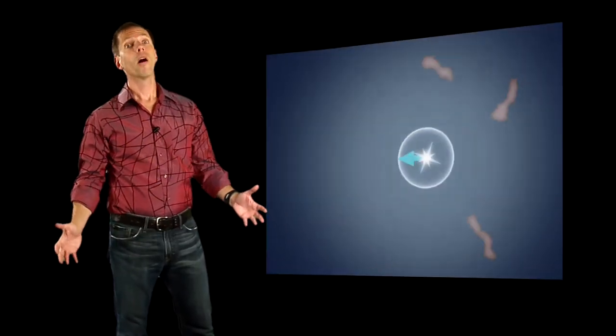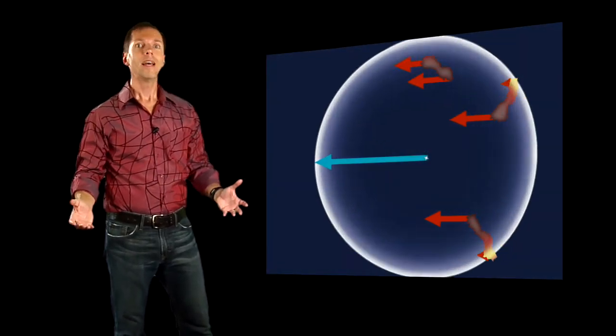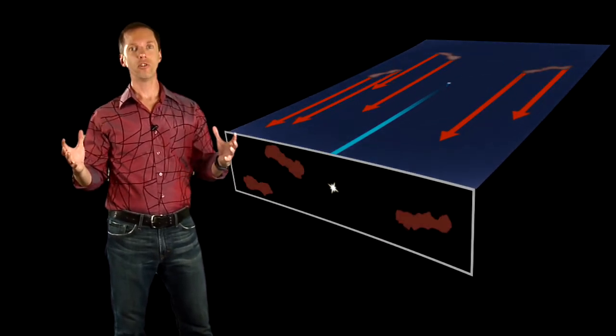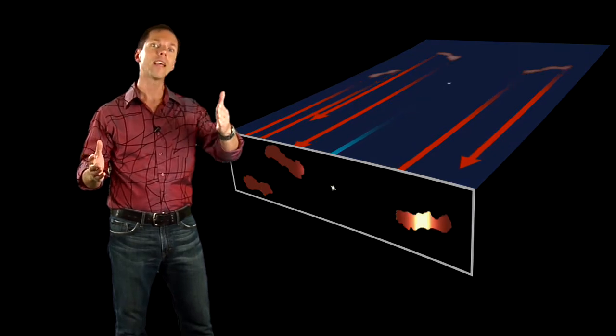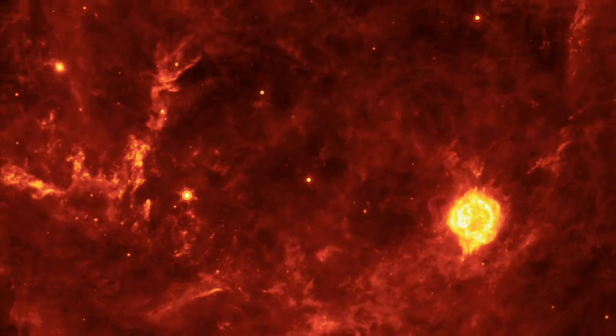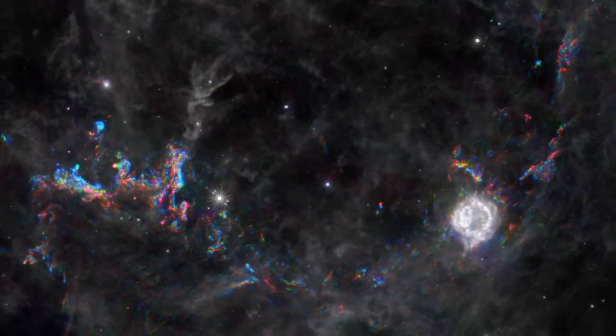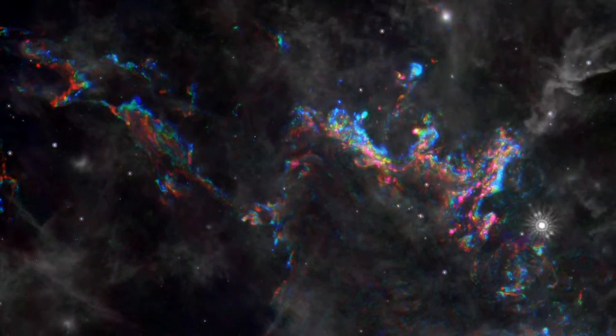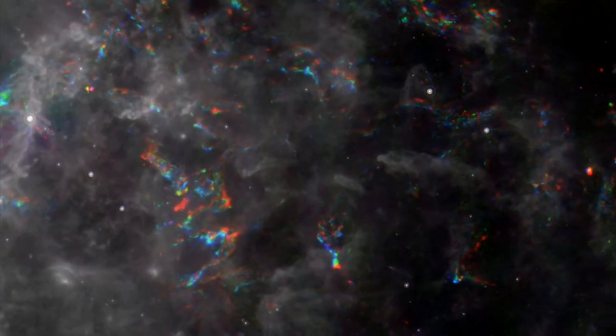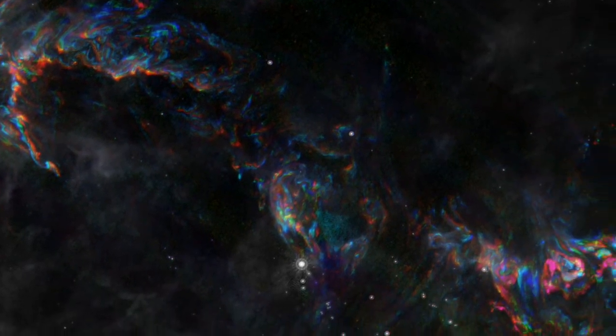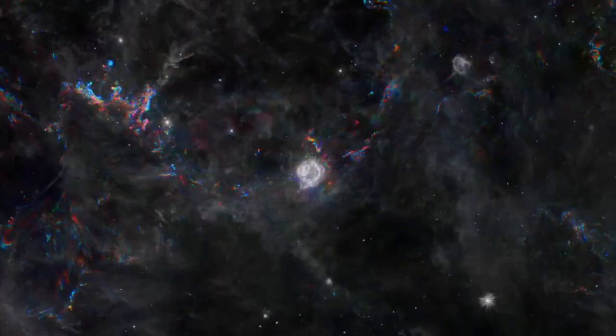But this light echo also reveals more than just the supernova. The expanding flash also lets astronomers study the three-dimensional structure of the dust by illuminating it one slice at a time. If we combine the images, assigning colors to the observation dates, the result is a prismatic display of the 3D dust structure. The nearest dust is blue and the most distant is red, while everything that stays constant is gray. We can see that the interstellar dust lies in sheets and filaments, not, for instance, big puffy clouds.